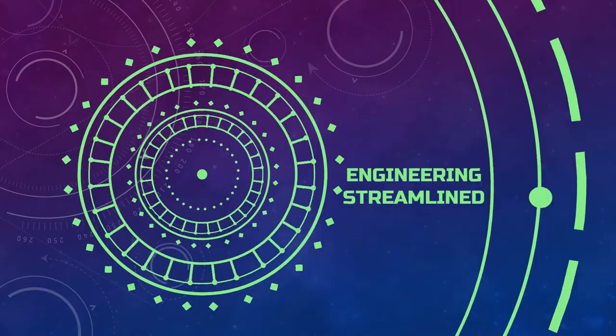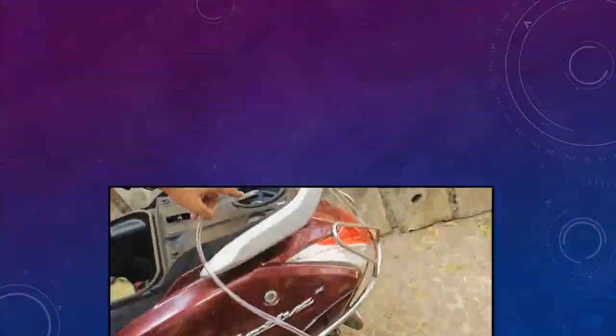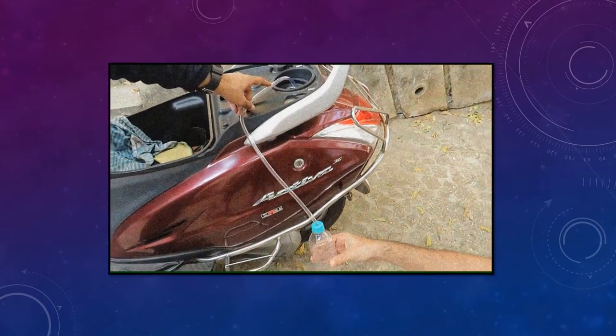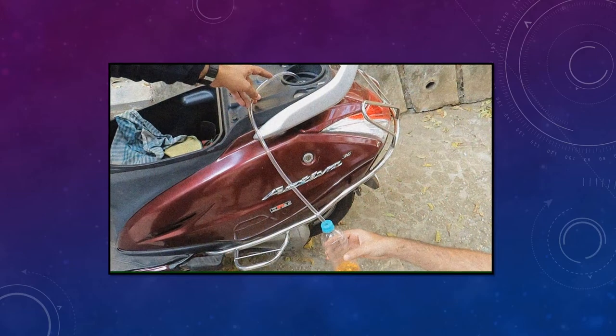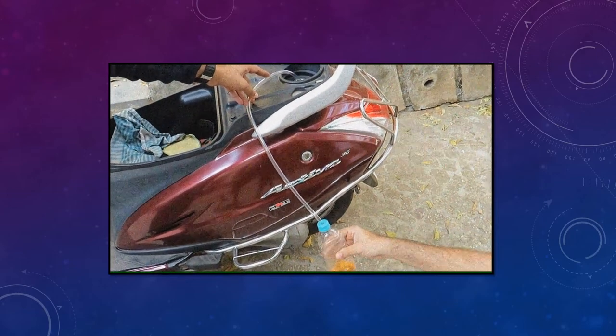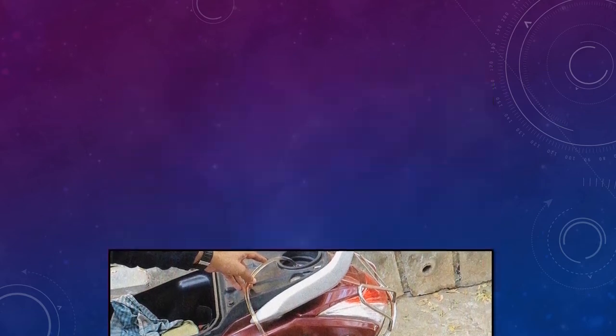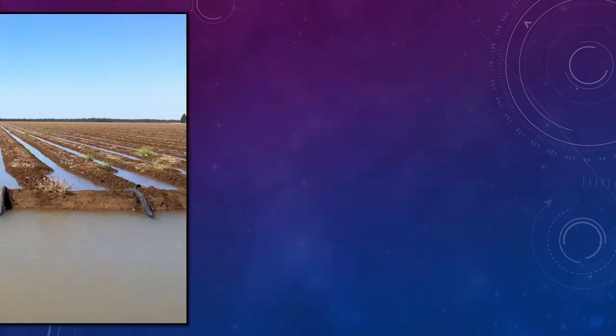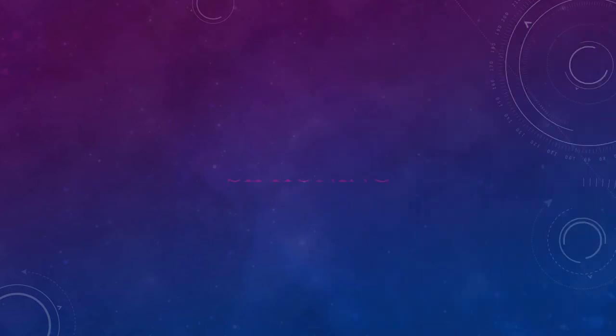Hello friends, welcome to Engineering Streamlined. You may have seen people taking out petrol from their vehicles just by sucking through a pipe, or squeezing a plastic bottle attached to a pipe and then automatically the petrol flows. Or you must have seen big pipes coming out from fields which control the amount of water inside the fields. This is due to a process known as siphoning. Today we will understand how this siphoning works.